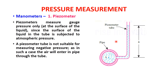For a pipe section, a piezometric tube can also be employed. Piezometers measure gauge pressure only, since the surface of the liquid in the tube is subjected to atmospheric pressure. A piezometer tube is not suitable for measuring negative pressure, as in such a case air will enter the pipe through the tube. Therefore, it can only measure gauge pressure, not vacuum pressure.